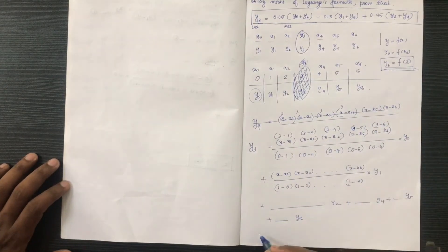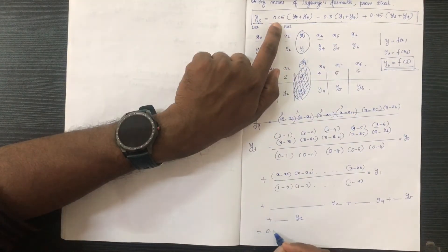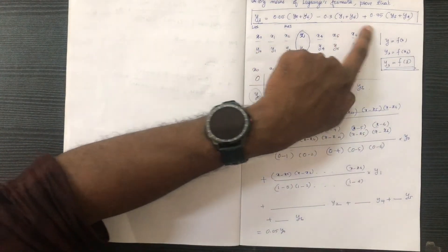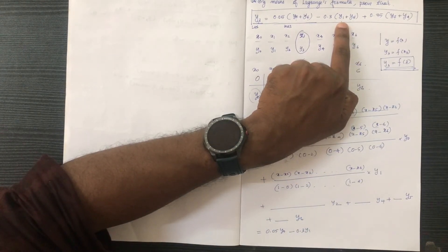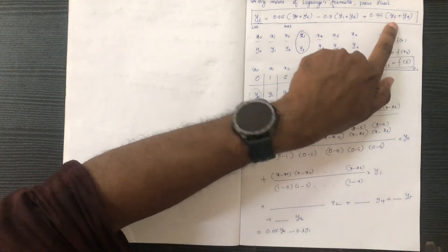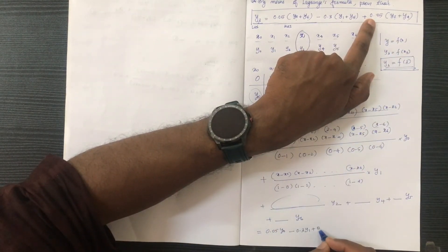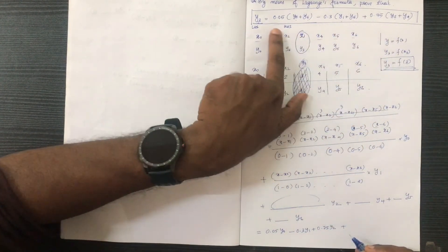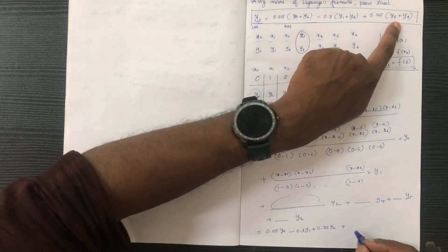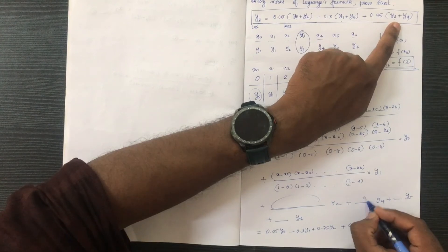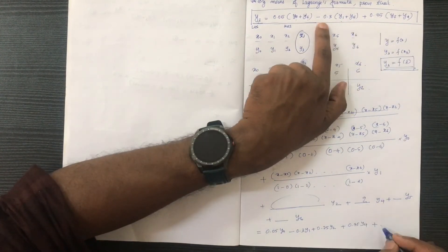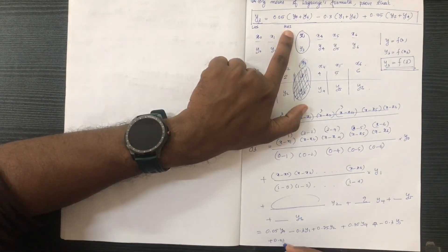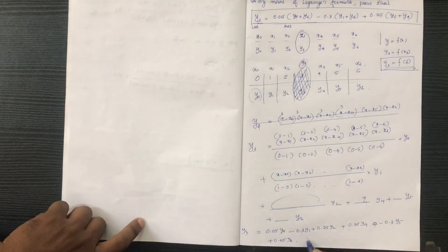Continuing with the remaining terms: y0, y1, y2, y3, y4, y5, y6 are placed in their corresponding Lagrange basis terms. Each term has the appropriate numerator and denominator factors, and the full expansion gives y3 on the left-hand side, completing the proof.